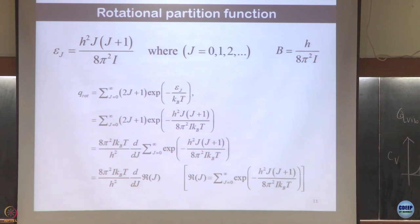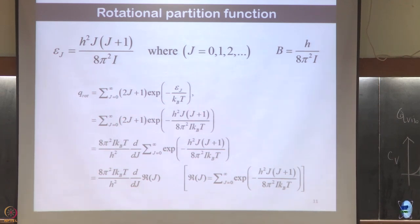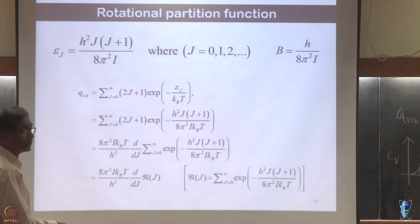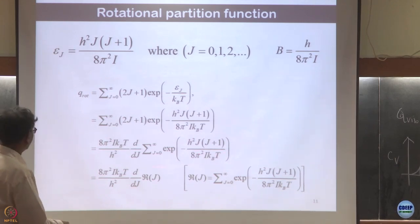I put in 2J+1 as the density of states and the energy H²J(J+1). Something very interesting: if I take the derivative of J(J+1), I get 2J+1. So J²+J becomes 2J+1, but I also get out H²/8π²IkT, which I then compensate for.